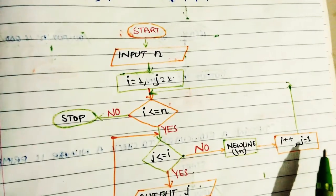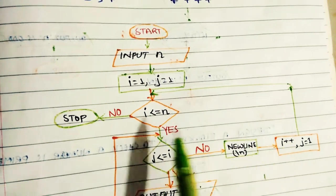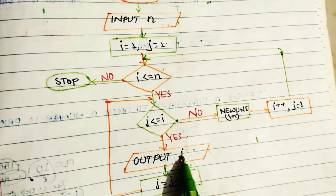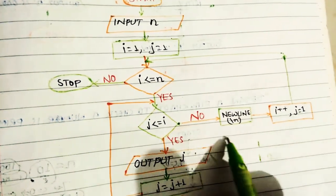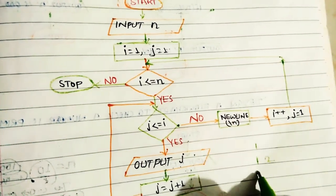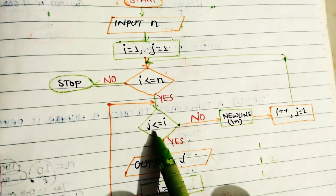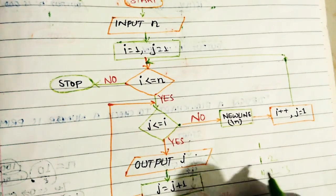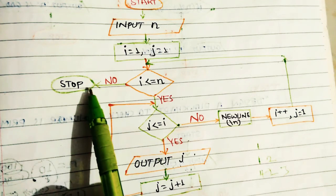In the second pattern, in the first line we print once. When I reaches 2, J starts at 1. Since 1 is less than 2, we print 2 times — J prints 1 then 2. When J value is 3, we go to the no part and print a new line. Then I becomes 3, J resets to 1, and since 1 is less than or equal to 3, we print 1, 2, 3. This way the flowchart prints the number pattern. When I reaches 5, it stops. This is all about how we design a flowchart for such patterns.